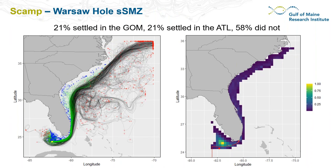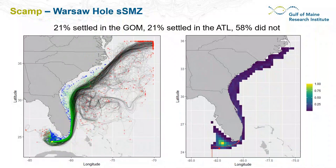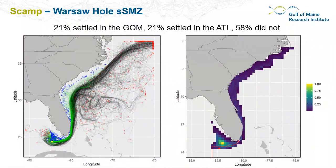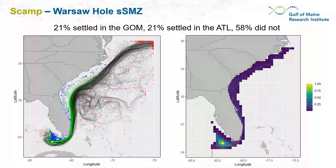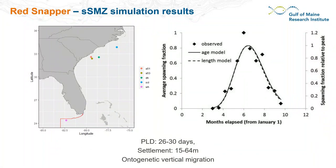From the Warsaw Hole spawning SMZ off the Florida Keys near the Dry Tortugas, 21% of simulated larvae settled in the Gulf of Mexico and 21% settled in the Atlantic. Even though density of settled particles is highest in the Gulf of Mexico just north of the SMZ, the same amount that settled in the Gulf also settled in the Atlantic — they're just much more widely distributed spatially across the entire U.S. South Atlantic.